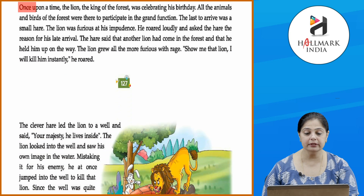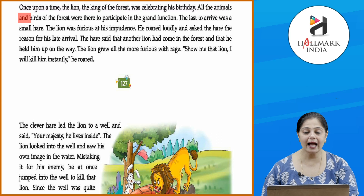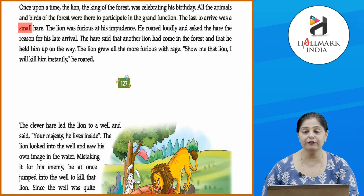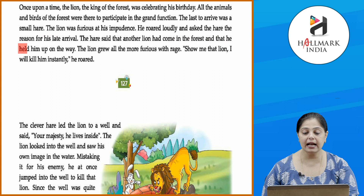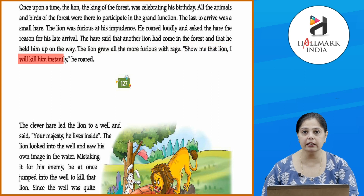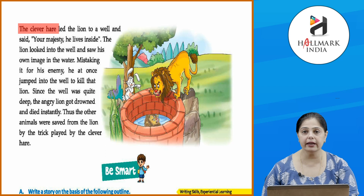Let's look at how this story is made. Title: 'The Lion and the Hare.' Once upon a time the lion, the king of the forest, was celebrating his birthday. All the animals and birds of the forest were there to participate in the grand function. The last to arrive was a small hare. The lion was furious at his impudence — he roared loudly and asked the hare the reason for his late arrival. The hare said that another lion had come into the forest and had held him up on his way. The lion grew all the more furious with rage and said, 'Show me that lion, I will kill him instantly!'